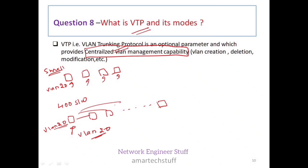The one-liner answer for VTP is: centralized VLAN management. When you create VLAN 20 on one switch it is replicated; if you delete VLAN 10, it is also deleted on all switches. VLAN management from a centralized location — that is the reason we call it centralized VLAN management capability.